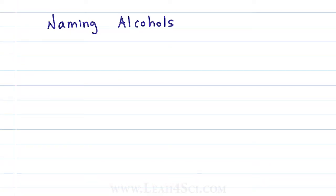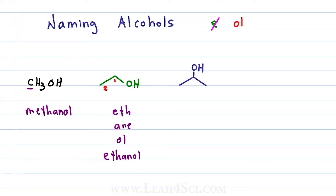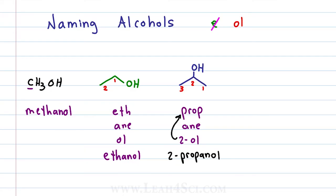When it comes to naming alcohols, you simply drop the E at the end of the name and add OL for the -ol in alcohol. Methanol gets the name 'meth' from having one carbon, 'ane' from just being an alkane, then we drop the E and add OL for methanol. Ethanol has two carbons giving us 'eth,' last name 'ane,' add the OL and we get ethanol — we don't need a number 1 because it's self-understood as being the carbon holding the OH. For a three-carbon molecule, we have 'prop,' no double bonds for 'ane,' an OL on carbon 2 for 2-ol — bring the 2 out to the front for 2-propane, drop the E, add OL for 2-propanol.